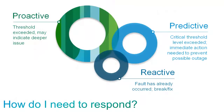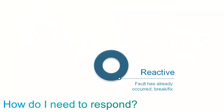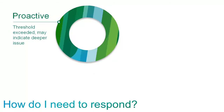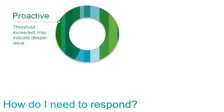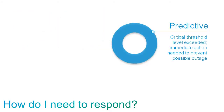To help with understanding the severity of a fault, you can divide the faults into three categories: reactive, proactive, and predictive. Reactive means that the fault has already occurred — the blade has failed, the processor has overheated, something's broken and you need to fix it. A proactive fault lets you know that a set threshold has been exceeded and that continuing to exceed that threshold may create issues if the cause of the fault is not fixed soon. The threshold exceeded is non-critical, so you have time to address the problem before any critical functionality adversely affects the system. Predictive means that a critical threshold has been exceeded and immediate action must be applied to prevent further damage or outages.